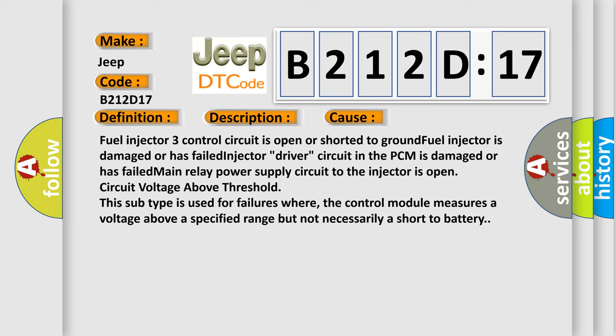Circuit voltage above threshold. This subtype is used for failures where the control module measures a voltage above a specified range but not necessarily a short-to-battery.